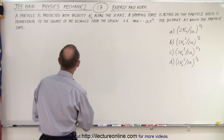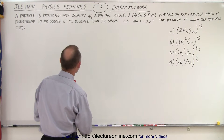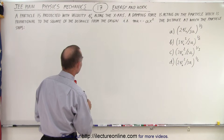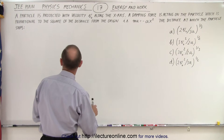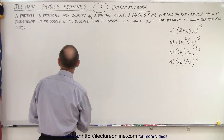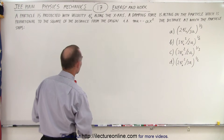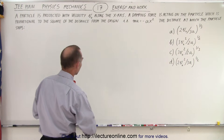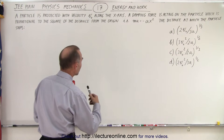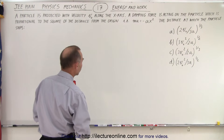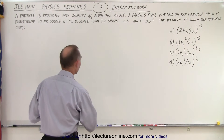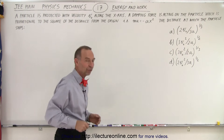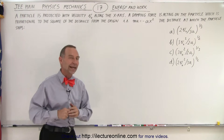A particle is projected with velocity V₀ along the x-axis. A damping force is acting on the particle which is proportional to the square of the distance from the origin — in other words, Ma equals minus Ax squared. The distance at which the particle stops is one of four possible answers.